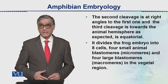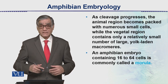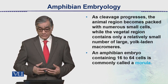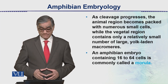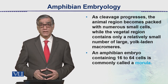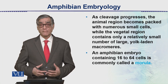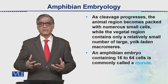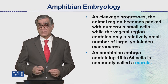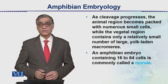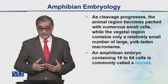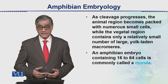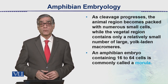As cleavage progresses, the animal pole becomes packed with numerous small cells, while the vegetal region contains only a relatively small number of large yolk-laden macromeres. When the amphibian embryo reaches the 16 to 64 cell stage, it is called the blastula.